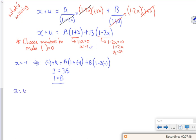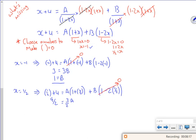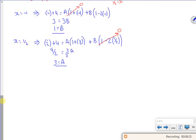So I've tried x is minus 1. So now I'm going to try x is a half. So I've got a half plus 4, that's 4 and a half, so 9 over 2. It's A lots of 1 plus a half, so that's going to be 3 over 2A plus B lots of minus 2 lots of a half, which is 0. So this bit here becomes 0. That bit there becomes 0. Multiply through by 2 over 3 gives me 3 for A. And I've found it.